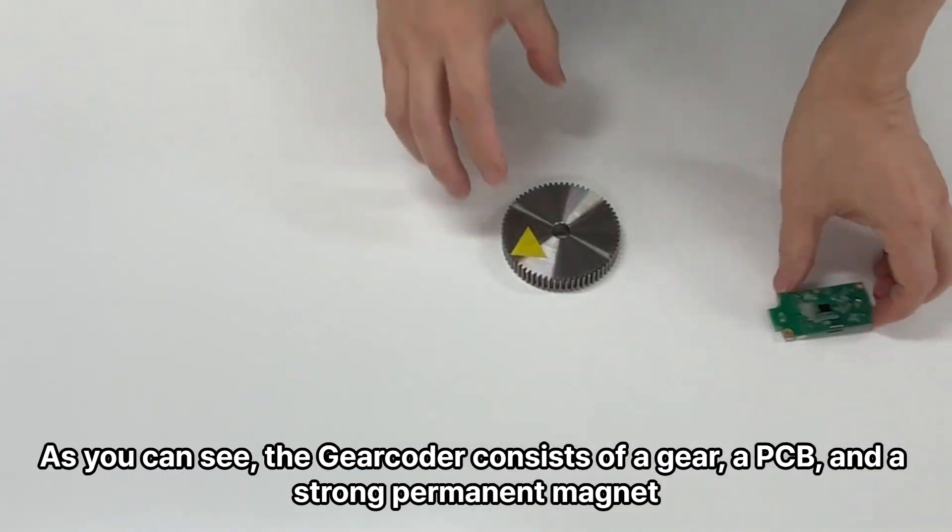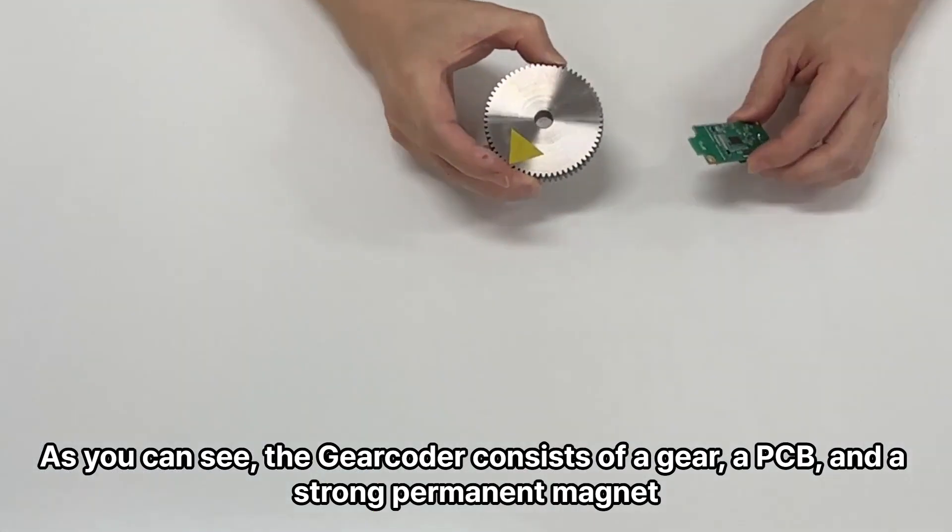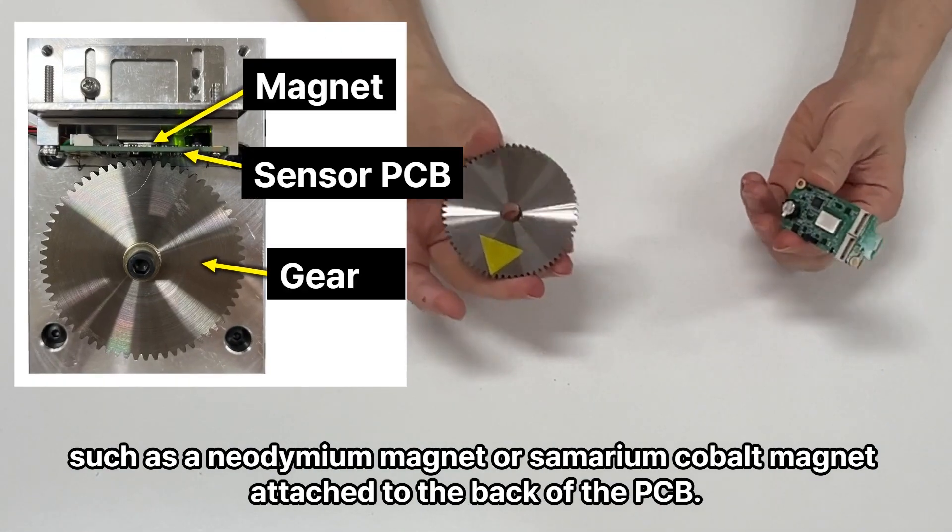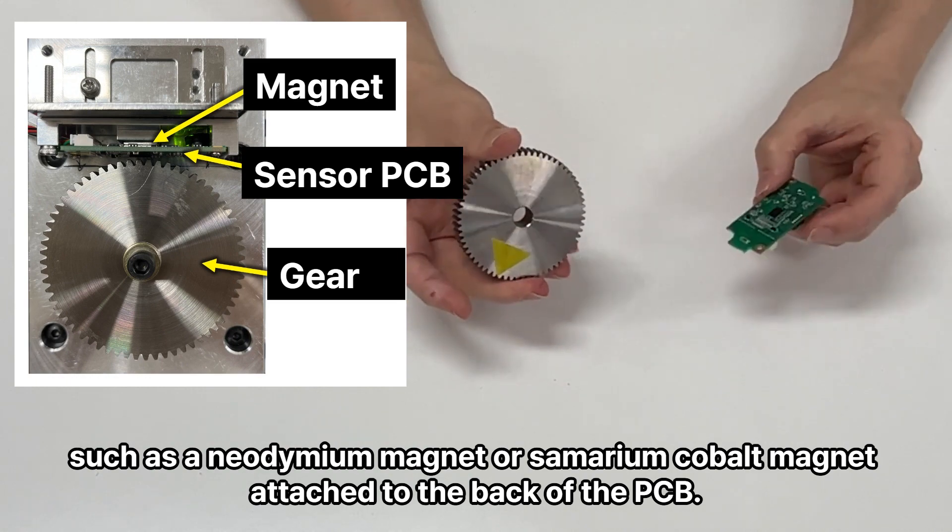As you can see, the gearcoder consists of gears, a PCB, and a strong permanent magnet, such as a neodymium magnet or samarium cobalt magnet attached to the back of the PCB.